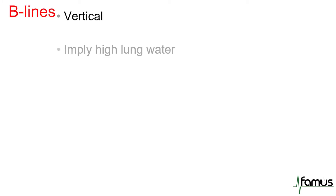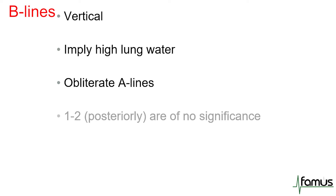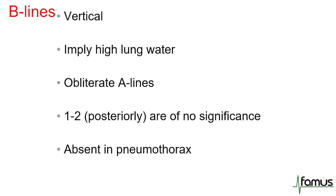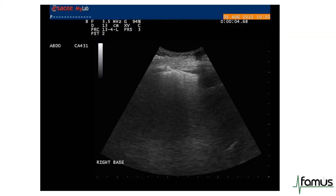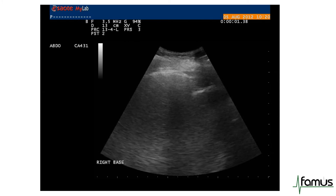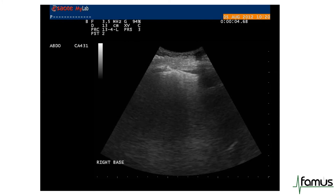B lines, by contrast, are vertical. They tend to imply high lung water or a wet lung. They obliterate A lines where they're present. Usually one to two posteriorly, towards the lung bases, are not considered significant. They are absent in pneumothorax — so if you see B lines, it effectively rules out pneumothorax. You will see B lines in conditions like ARDS, left ventricular failure, and in pneumonia, including COVID pneumonia. You can see multiple vertical B lines in this slide, which move with respiration, and you'll notice there's an absence of A lines.